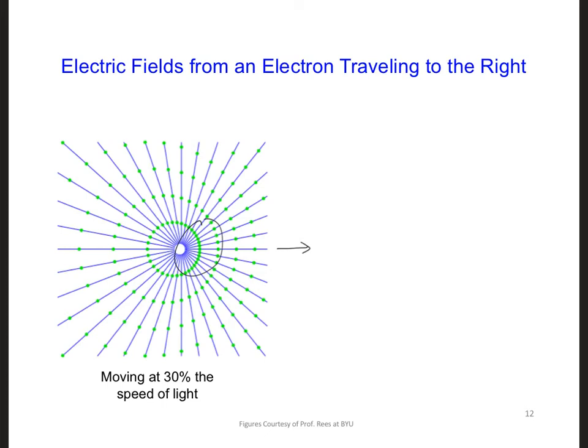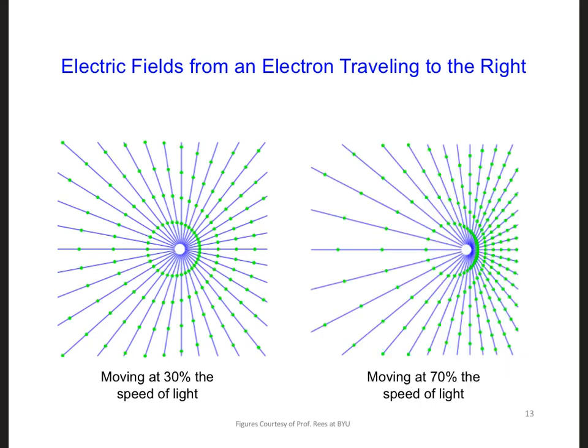Now, what if the electron were moving even faster, say, 70% the speed of light? What would those electric fields look like? Well, the fields on the right side would be bunched up even more. And that's because the electron is traveling even faster compared to the electric fields in this on the left side, the case on the left side.